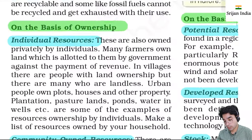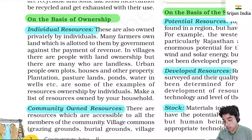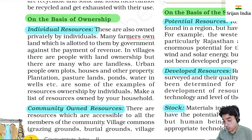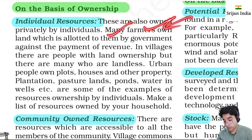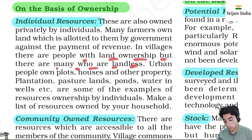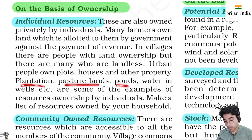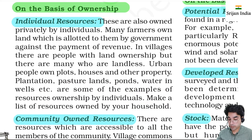On the basis of ownership - individual resources belong to one person and may be owned privately. Farmers own land allotted by the government against payment of revenue. Your house, your land - these are individual resources. Urban people have plots, houses, property. Plantations, ponds, wells - these are some examples of resource ownership by individuals.